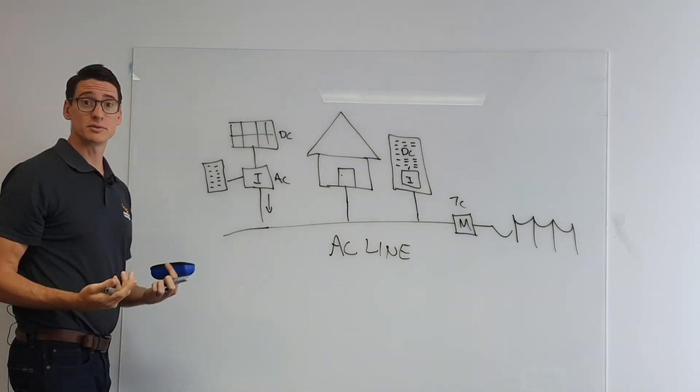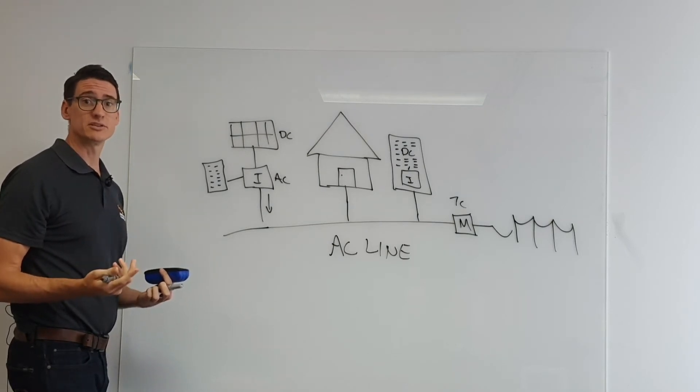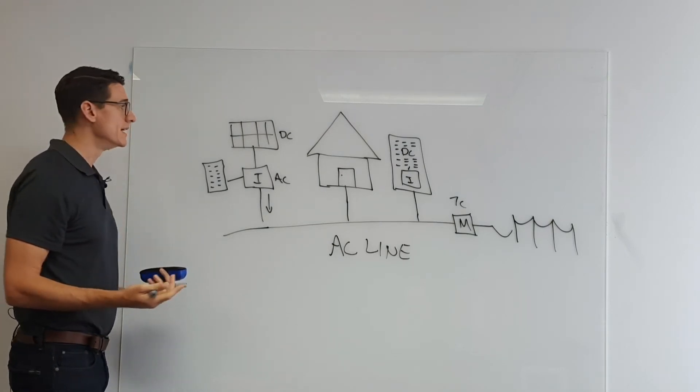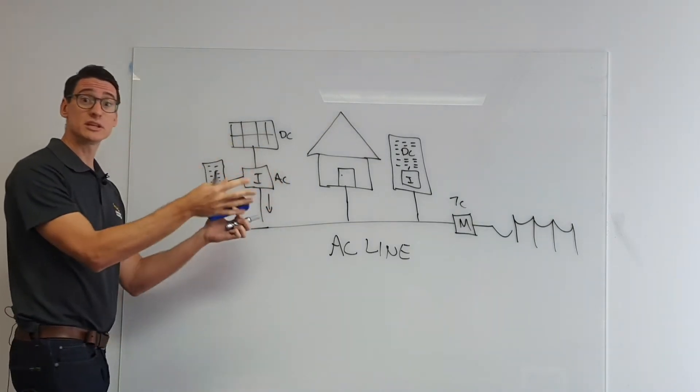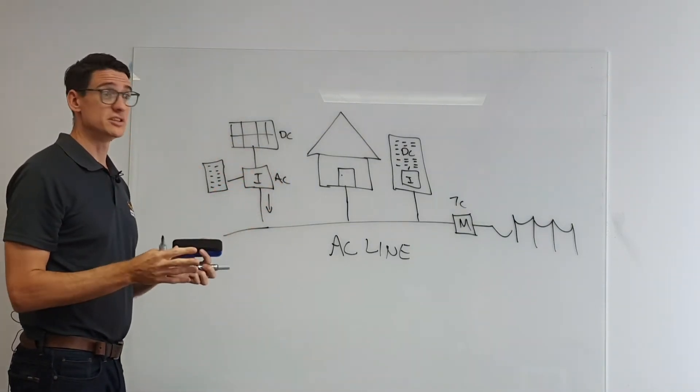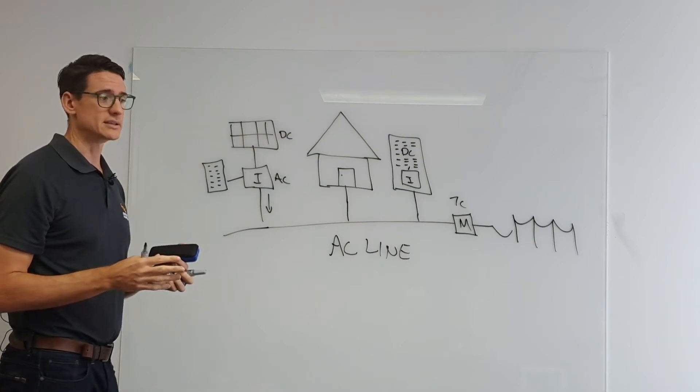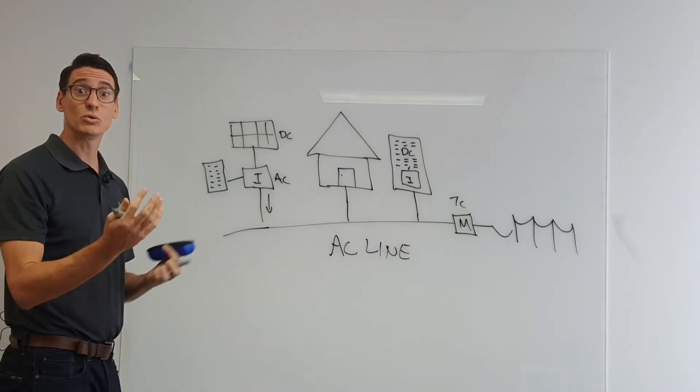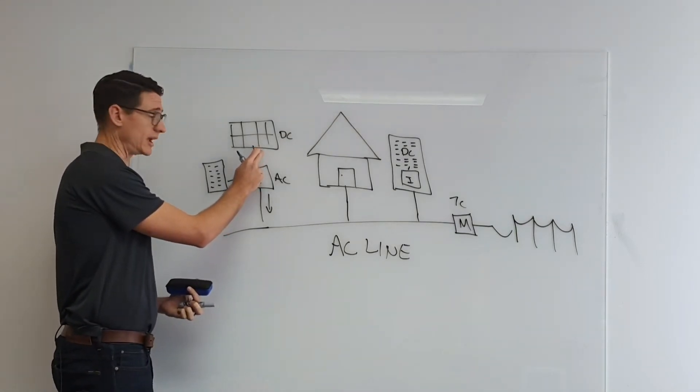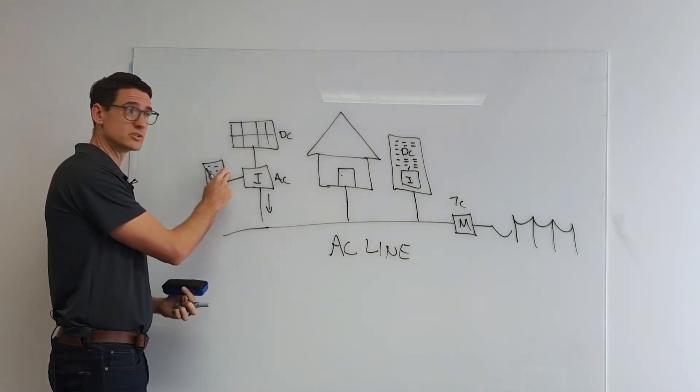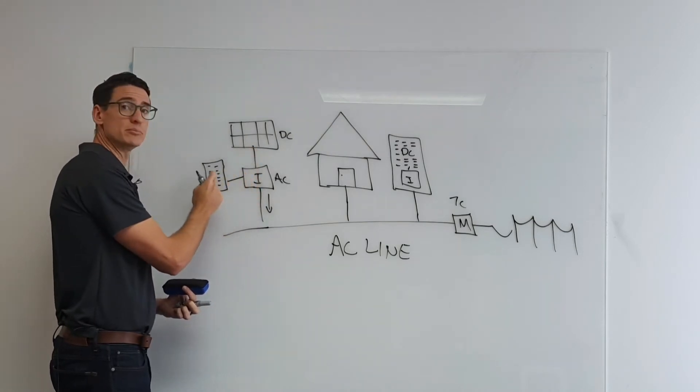What the Senec and the Sonnen do, the Senec V3 and the Sonnen 9.53, is they actually encapsulate this into a single unit. So it'll be a unit that sits somewhere in the home and it looks like a fridge, and it contains all of the componentry that's required to manage both your panels and your battery cells in a single unit. So you might say it has a DC input and a DC output.